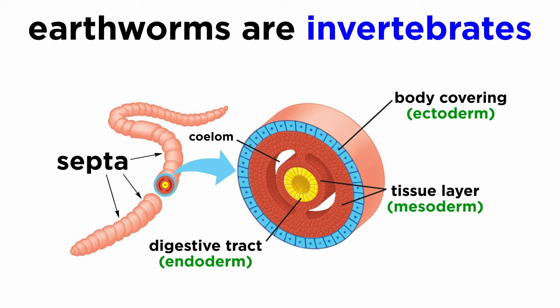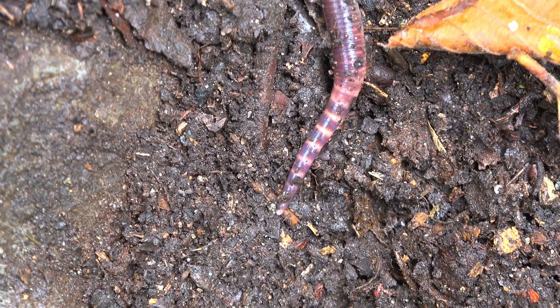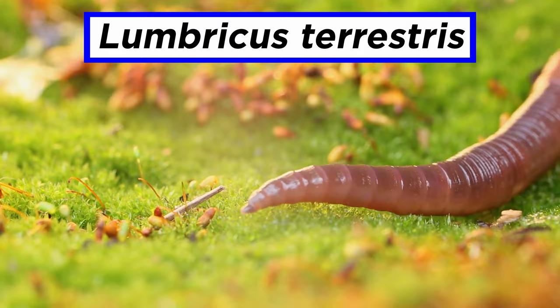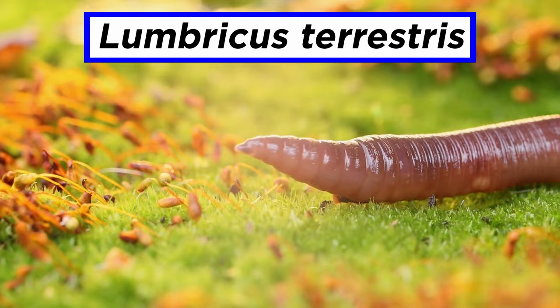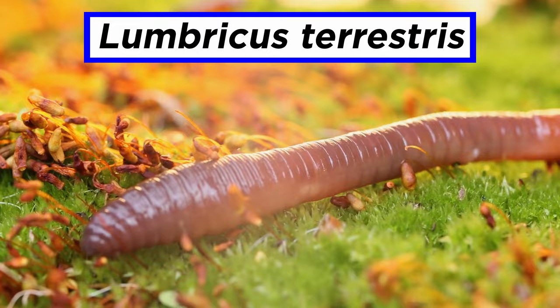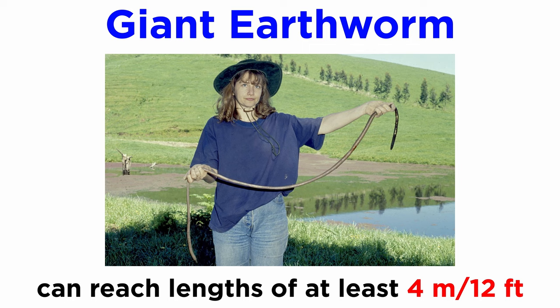Earthworms are terrestrial invertebrates that exhibit a tube-within-a-tube body plan. The outer tube is their skin, or integumentary system. The inner tube is the coelom, which surrounds the digestive system. They burrow into moist, rich soil and usually live within branched interconnected tunnels. The most familiar species is likely Lumbricus terrestris, the common earthworm, likely native to Western Europe but now distributed around the world. It is a relatively large species, but it pales in comparison to giant earthworms that can reach lengths of at least 4 meters, or more than 12 feet.